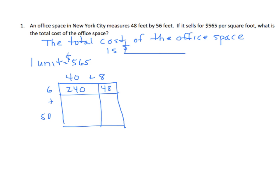Moving along to our lower row: 50 times 8 — that's 5 tens times 8 ones — gives 40 tens, which is 400. And 5 tens, or 50, times 4 tens, or 40, gives hundreds as our unit. I have 20 one-hundreds, which is 2,000. Now we'll find our partial products. I'm going to add my ones place, where I get 8. I have 4 in the tens place in 48, and 4 in the tens place in 240, so I have a total of 8 in the tens place. And I have 2 in the hundreds place.